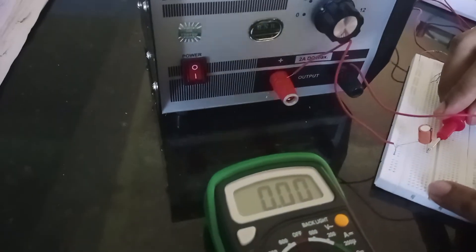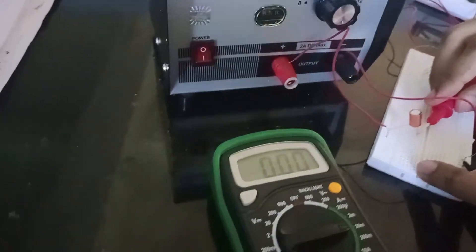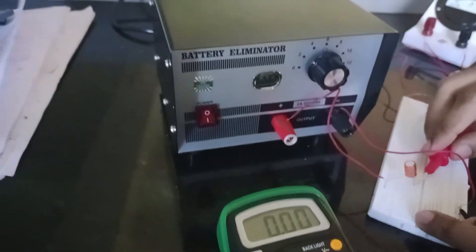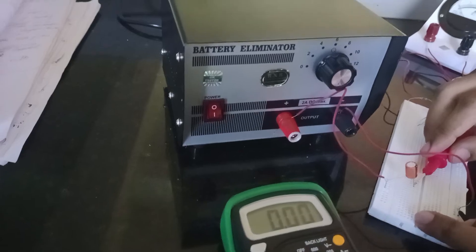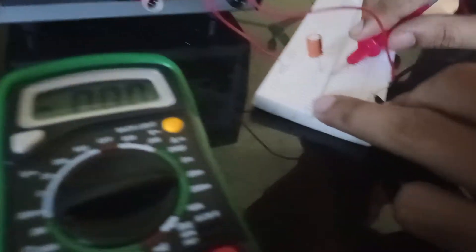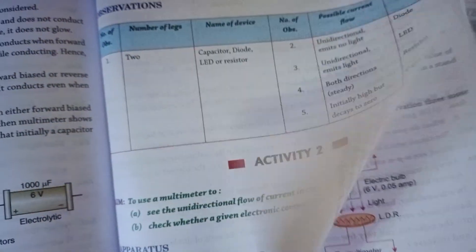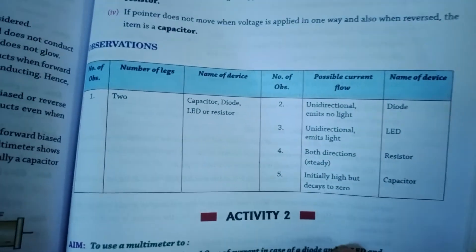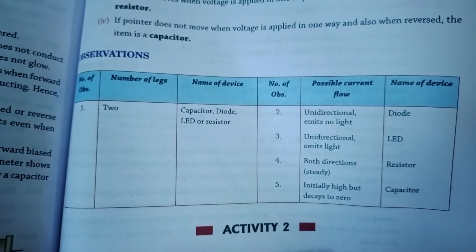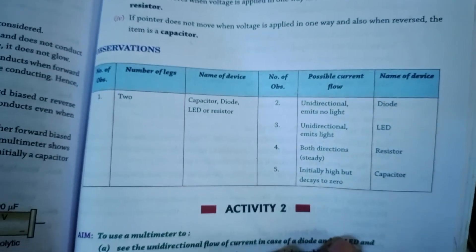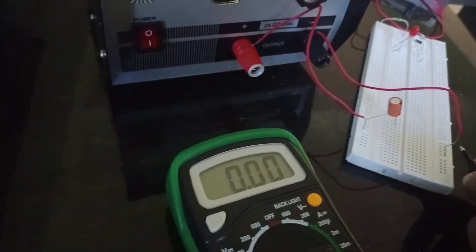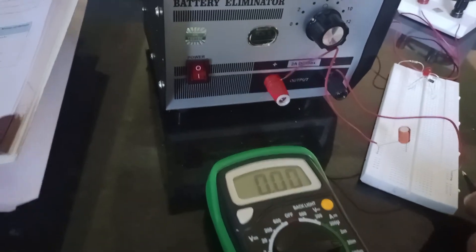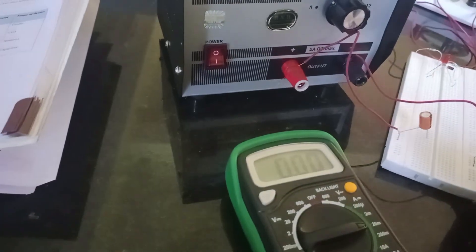So from a mixed sample of resistor, capacitor, diode, and LED, using our theoretical knowledge we can identify each component. You can make an observation table, perform this activity in your lab or at home if you have a multimeter and these components, and write your observations — explaining why you identified each component. Make a circuit diagram and record your observations. This is the first activity from Section B. Thank you.